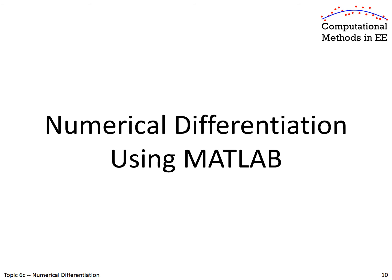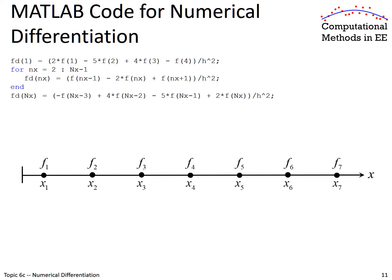On to calculating numerical derivatives using MATLAB. We have our seven-point grid, and at this point we know our function values at points 1 through 7, but we want to calculate and probably plot the second-order derivative. All of the MATLAB code you need is shown in the upper left. I want to step through this one line of code at a time and show you how it calculates the second-order derivative at each point, 1 through 7.